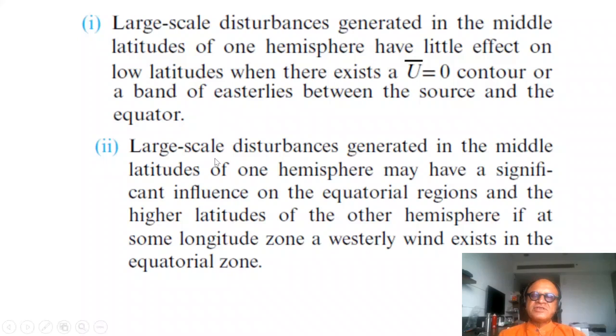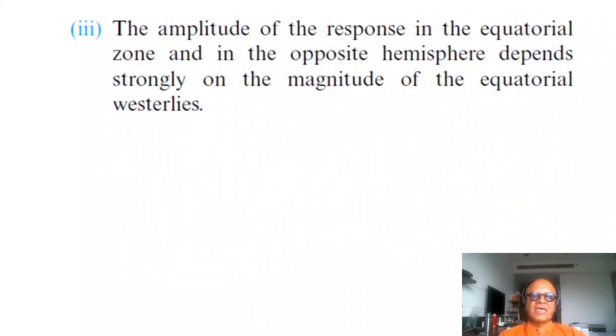Large scale disturbances generated in the mid-latitudes of one hemisphere may have significant influence on the equatorial regions and the higher latitudes of the other hemisphere if at some longitude a zone of westerly winds exists in the equatorial region. If you have the westerly duct, this influence can go clearly across the hemispheres.